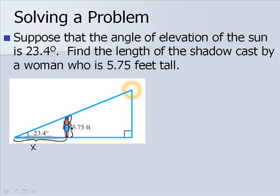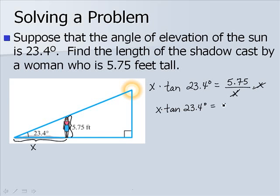Notice that we have our angle, the side opposite and the side adjacent, so we're dealing with tangent. The tangent of 23.4 degrees would be the opposite side, 5.75, over the adjacent side, X. We need to solve for X. First, we multiply by X, and then, we divide both sides by the tangent of our angle.